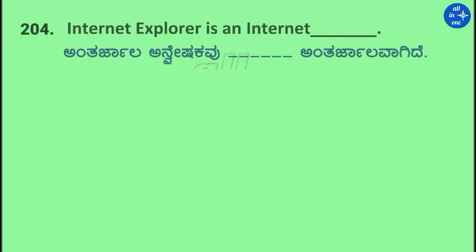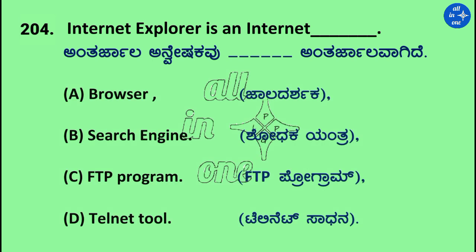Question: Internet Explorer is an internet dash. Options: Browser, Search engine, FTP program, and Telnet tool. Right answer is Browser.